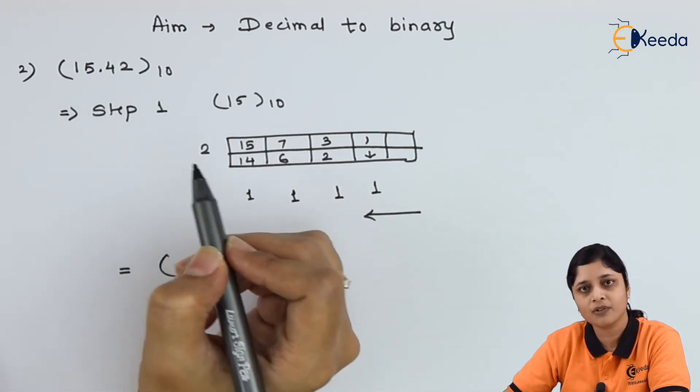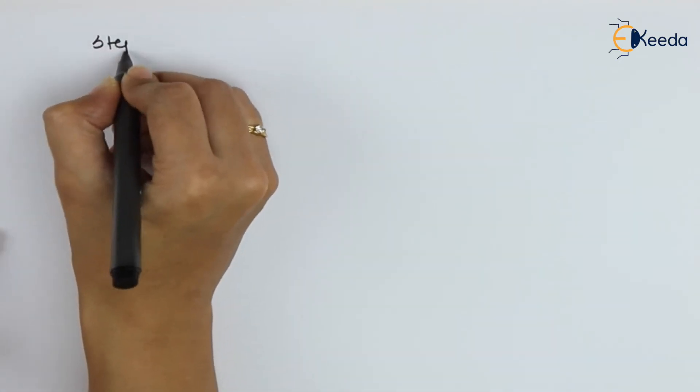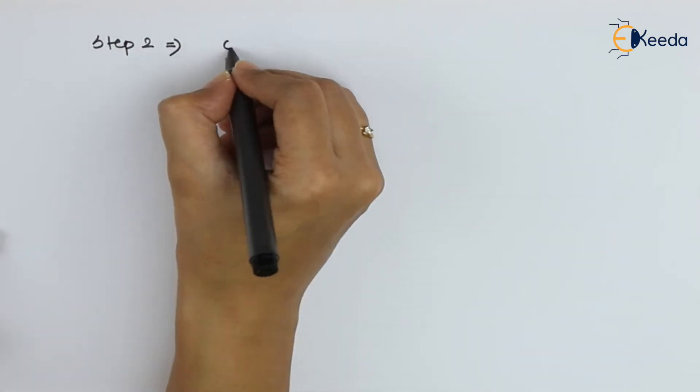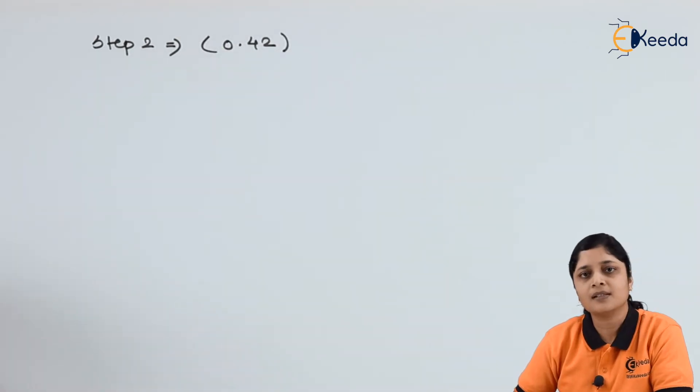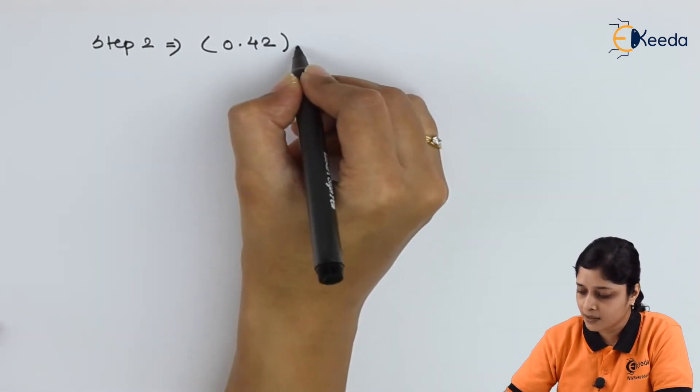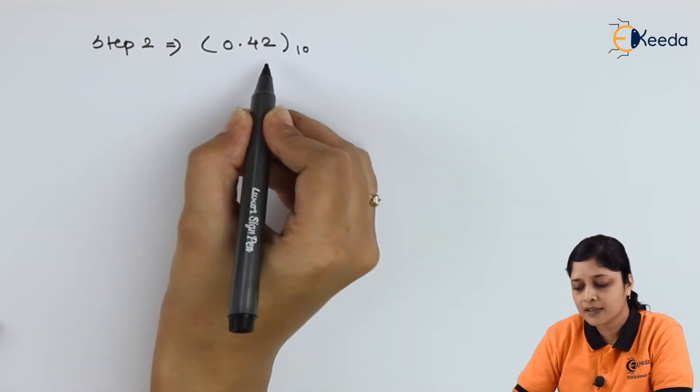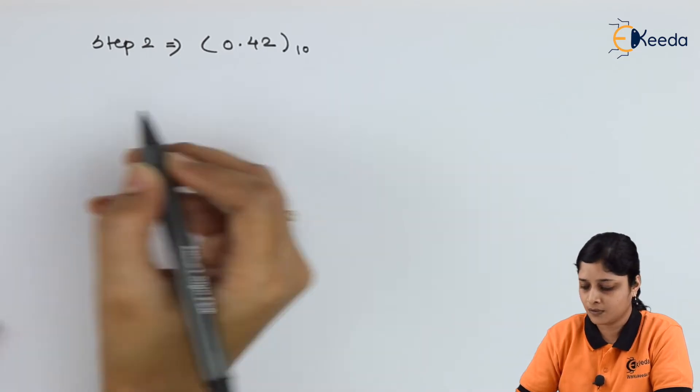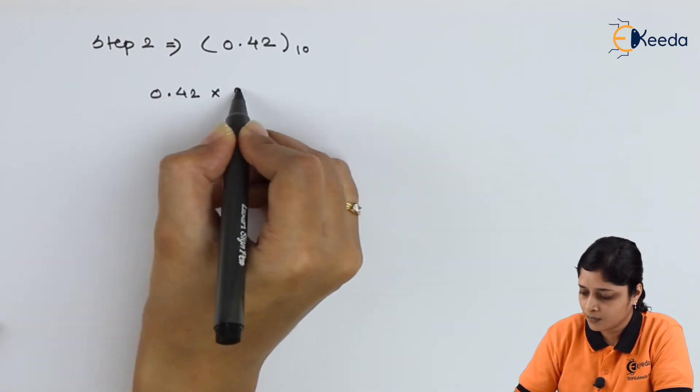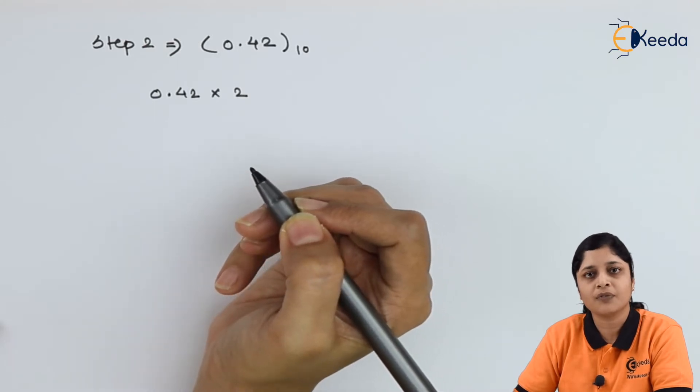Now in next step we will take 0.42. Let's see. Now in step 2 you have to take 0.42 to the base 10. Now for this type of number you have to apply successive multiplication approach. Successive multiplication gives you the final answer.